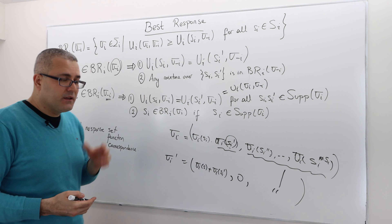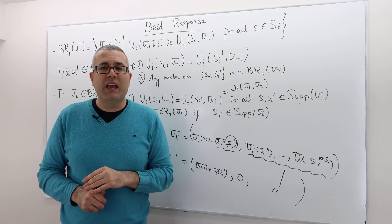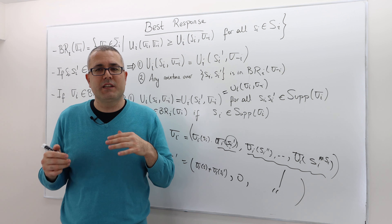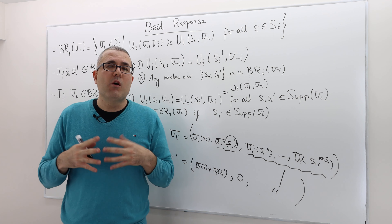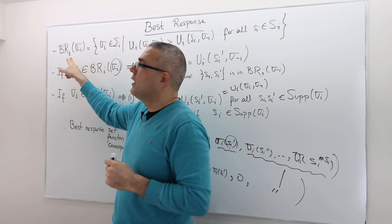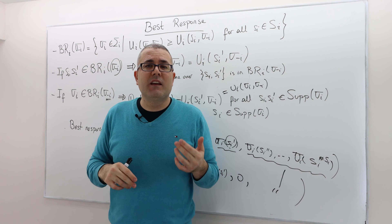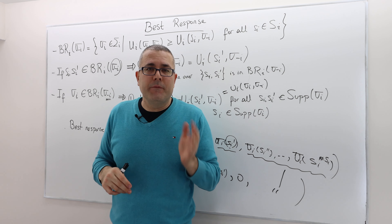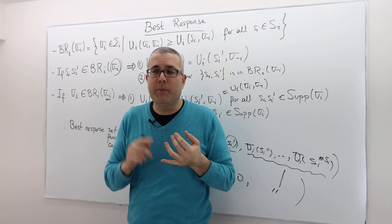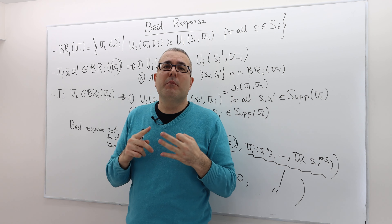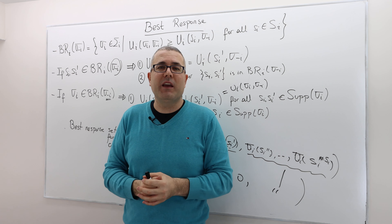Just one more remark: if the game doesn't have a continuous utility function or doesn't have a nicely behaved strategy space S_i, then the best response correspondence — the best response set — may actually be empty. So the best response set may be empty, may have just one element, but if it has two elements, it actually has infinitely many elements.